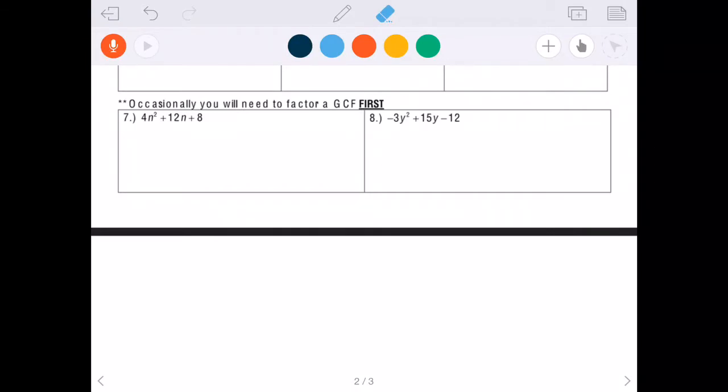We had a part one where it was just an intro, basic factoring where a is one. Then I also had a part two where a was negative one. This is going to be part three and this is going to be where we need to factor out a GCF first.